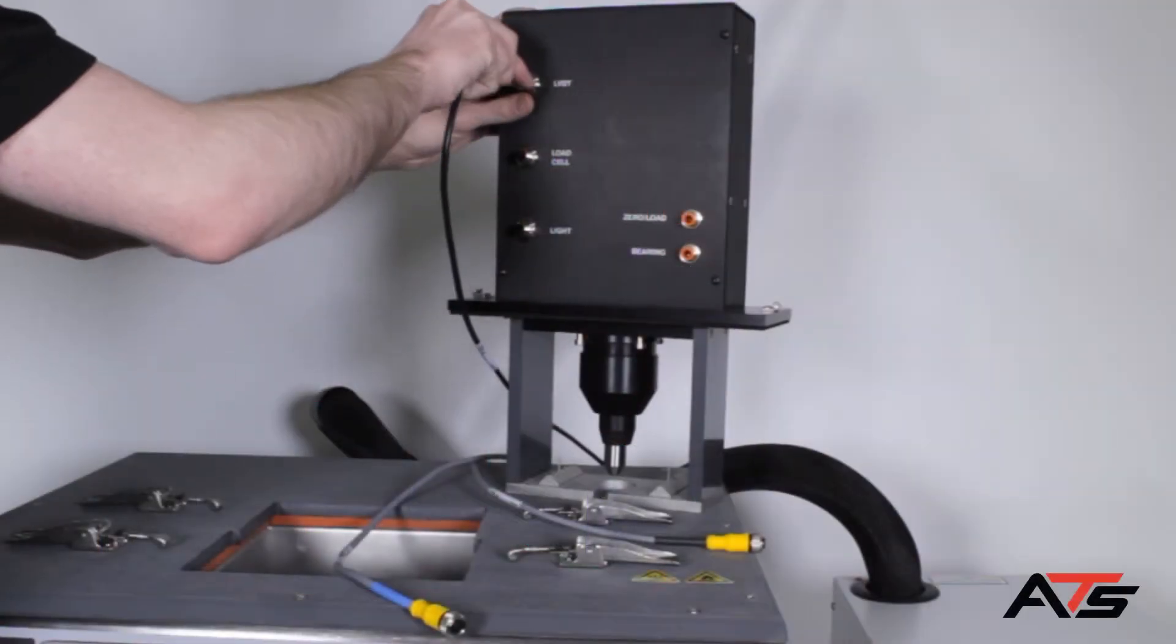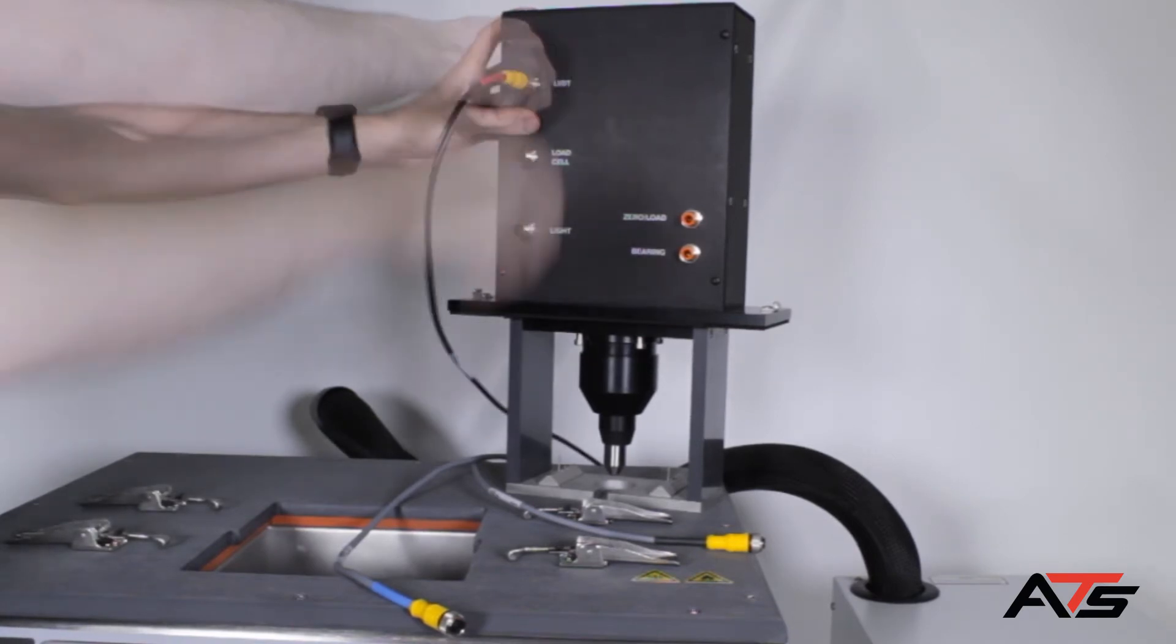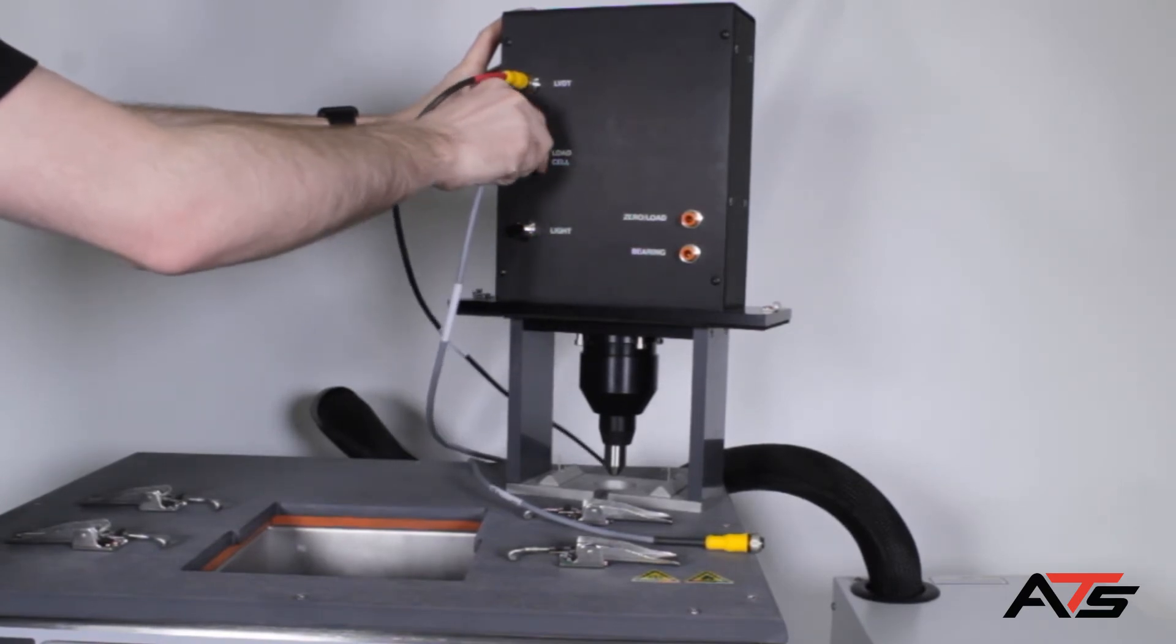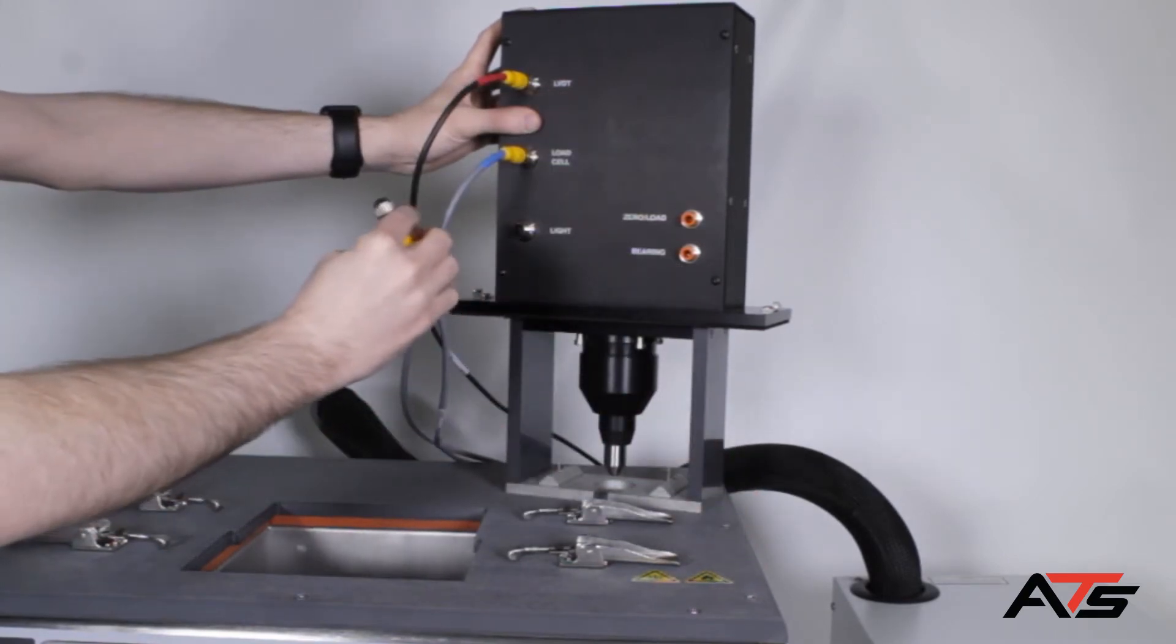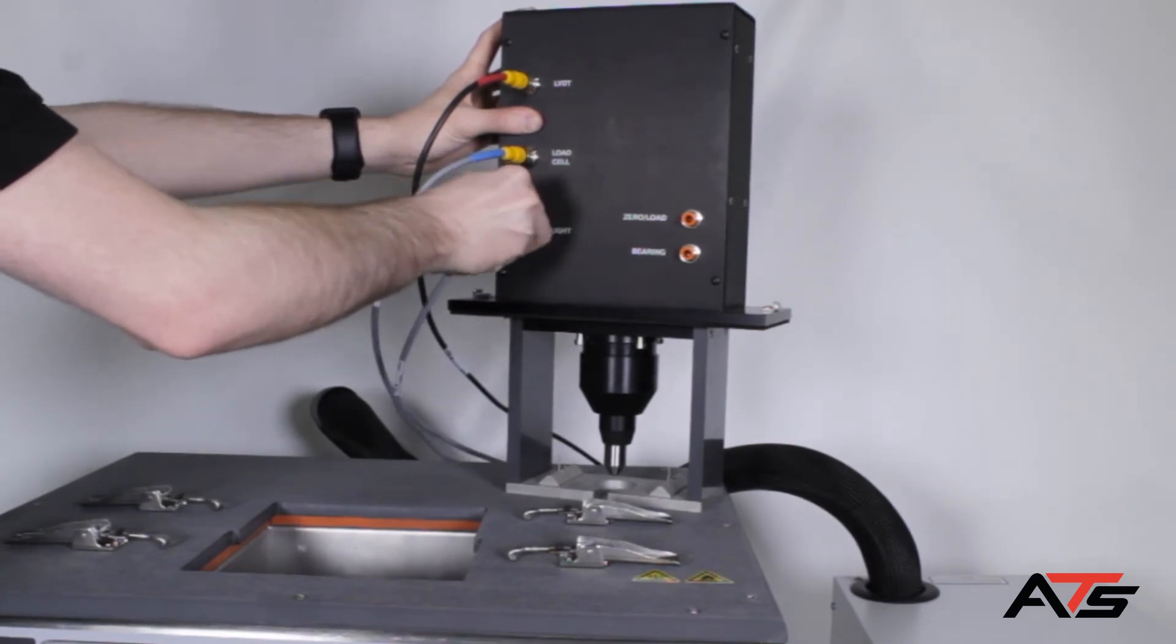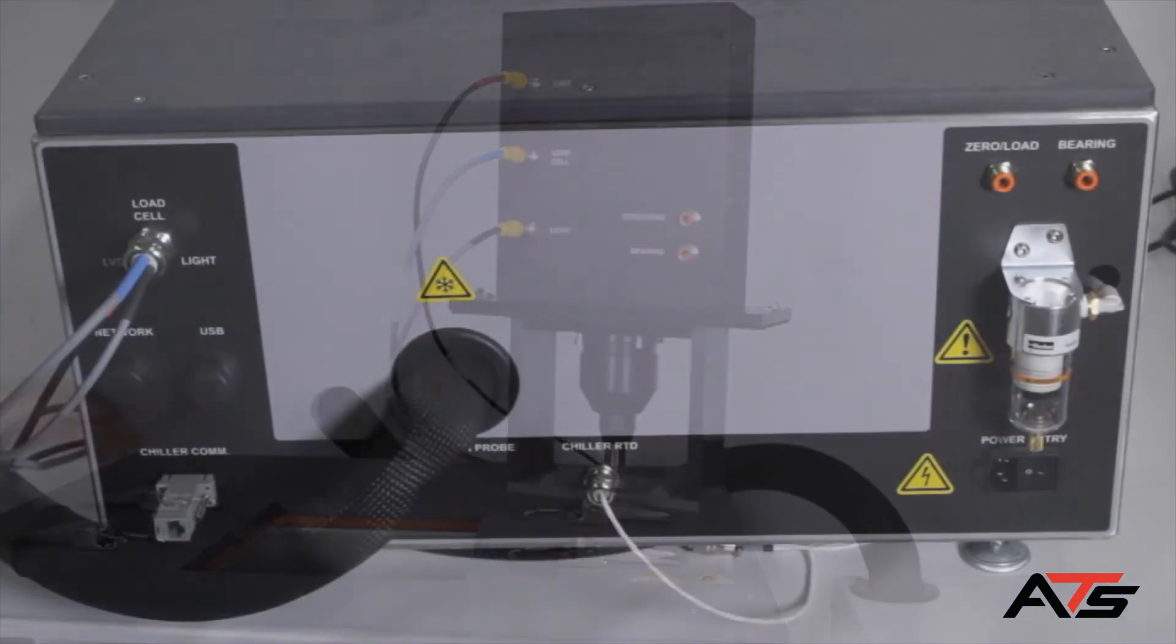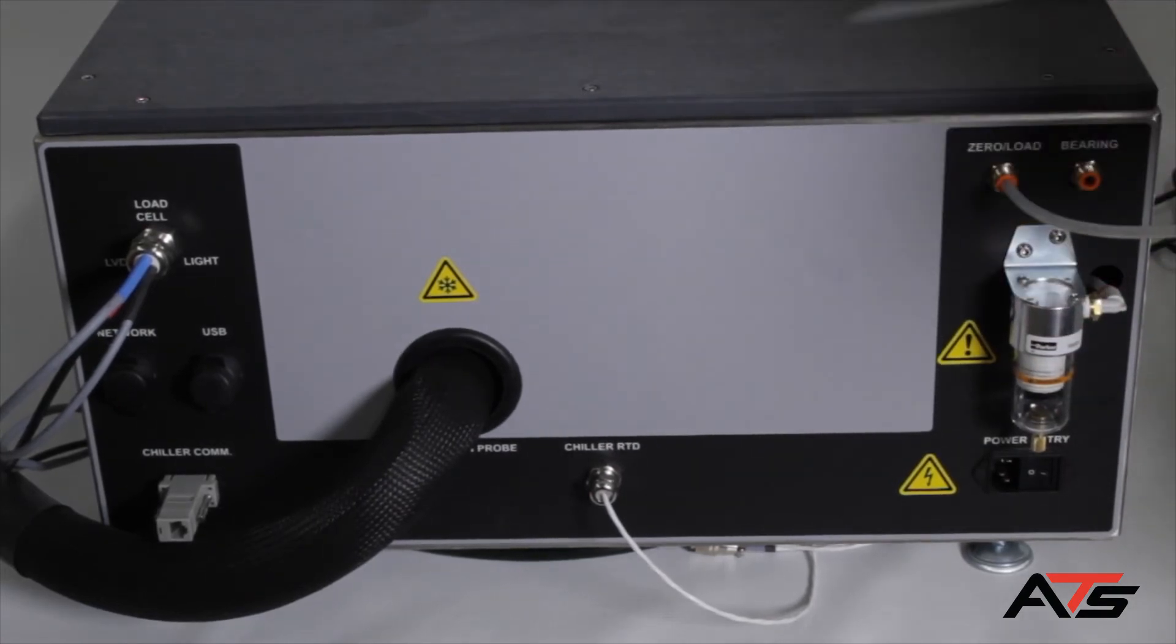Connect the electrical cables from the back of the base unit to the back of the load frame assembly. Connect the air hoses to the ports on the rear of the base unit and to the ports at the rear of the load frame assembly.